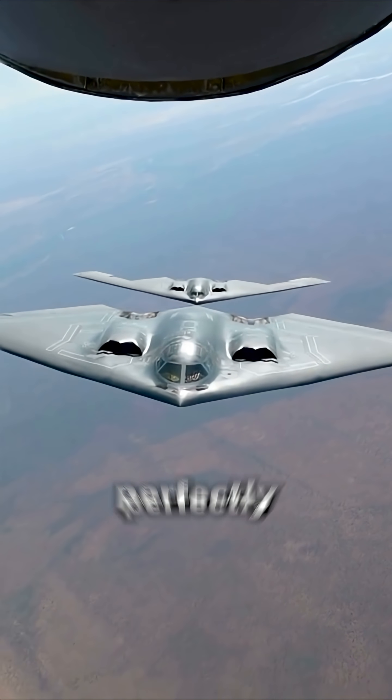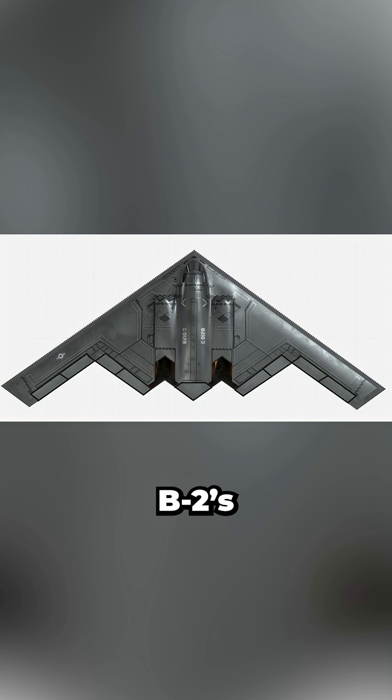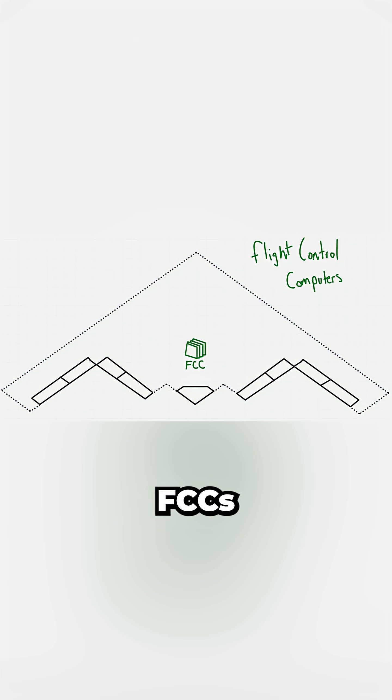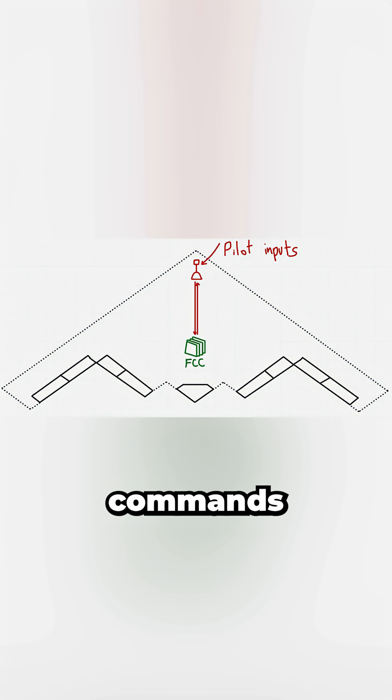How does a stealth bomber with no tail stay perfectly stable even in rough air? I'm an aerospace engineer and at the core of the B-2's flight control system are the FCCs, the Flight Control Computers, which blend the pilot's commands with real-time information from two key sensors.